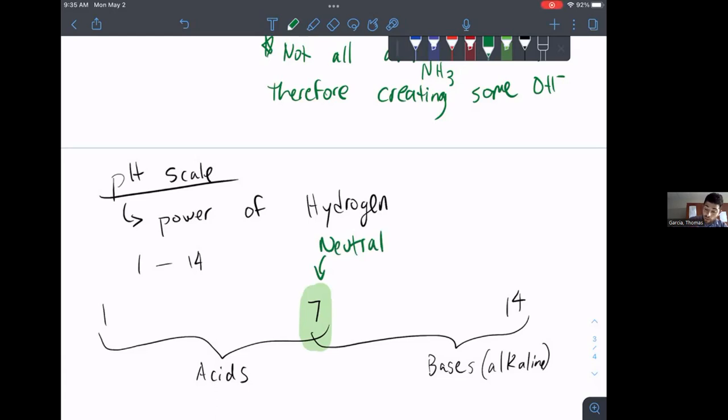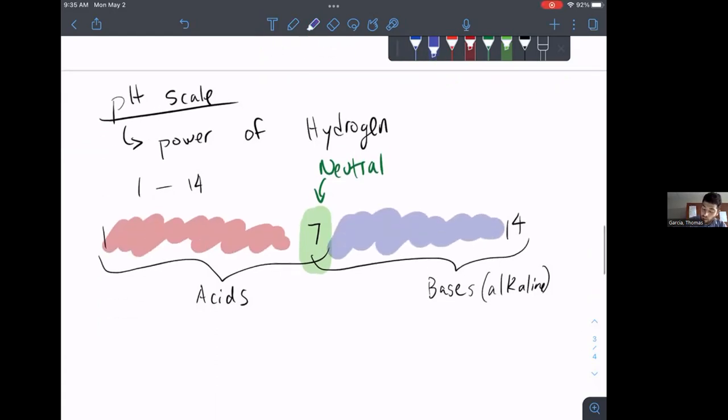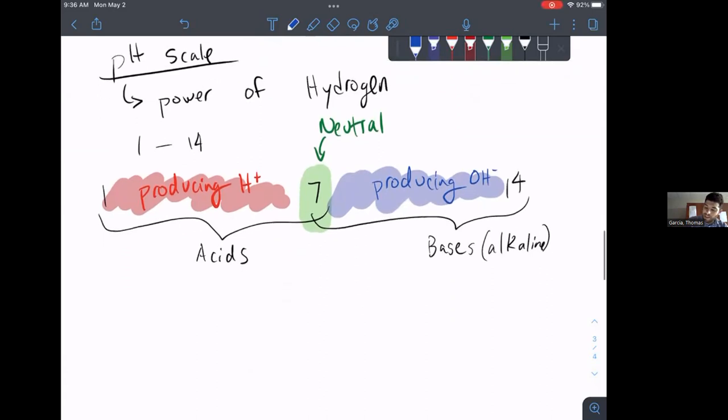So anything on our pH scale that is below, this will all be acidic. This will all be basic. So here, we're going to have producing hydrogen ions. Here, we're going to have producing OH, hydroxide ions. And if we want to get into the technicalities, we can calculate the pH of a solution by doing the pH equals the negative log of the concentration of hydrogen ions. So we just find out how much hydrogen is in the solution and then do the negative log of that. But we don't need to worry too much about that right now. What I mainly just want to focus on is the scale and whether or not a solution is one or the other.